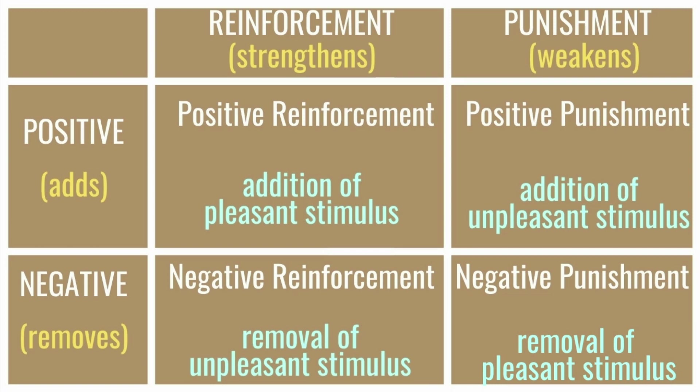In negative punishment, we remove something pleasant to reduce a behaviour. For example, my mom would tell me I had to study a particular topic and she would test me, and if I got even one answer wrong I would not get to go out and play that day. The behaviour we want to reduce is not paying attention and not studying, and the removal of the pleasant stimulus — not getting to play — is the negative punishment.